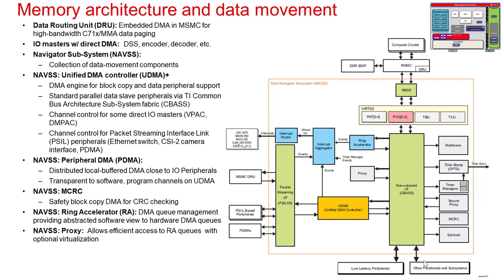This slide lists the many components which deal with data movement on the SoC. The primary DMAs on the device are the data routing unit, or DRU, which moves data to and from the MSMC L3, primarily for C7X and MMA, and then two instances of unified DMA, or UDMA, one located in the main domain and one in the safety MCU domain.